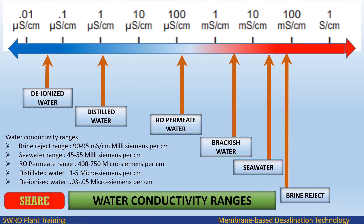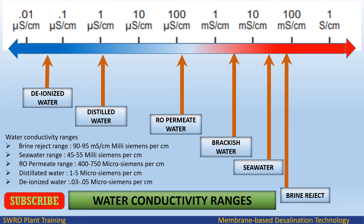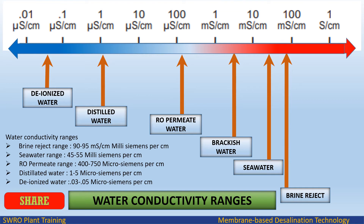Water conductivity ranges: brine reject range is 90 to 95 millisiemens per centimeter; seawater range is 45 to 55 millisiemens per centimeter; RO permeate range is 400 to 750 microsiemens per centimeter; distilled water is 1 to 5 microsiemens per centimeter; and deionized water is 0.03 to 0.05 microsiemens per centimeter.